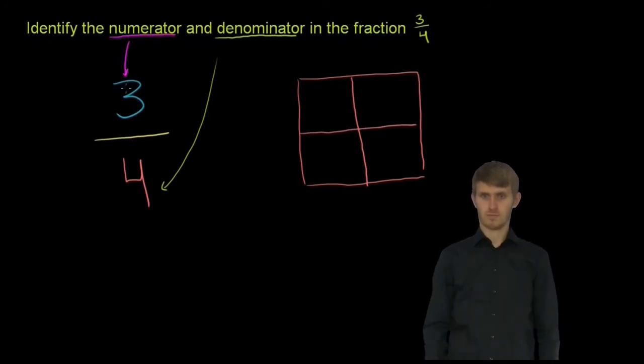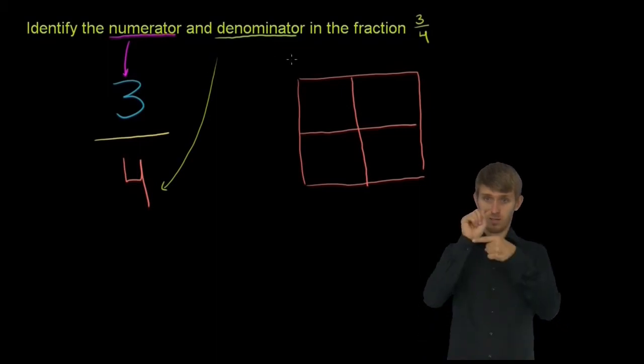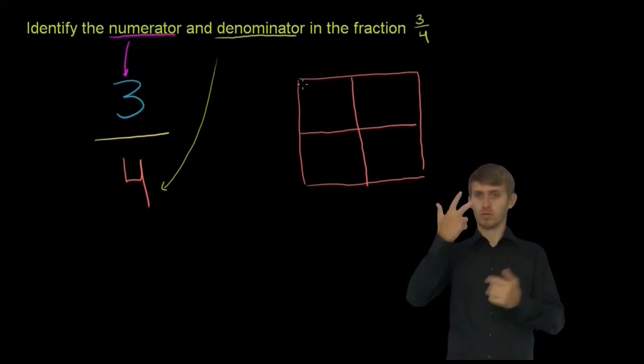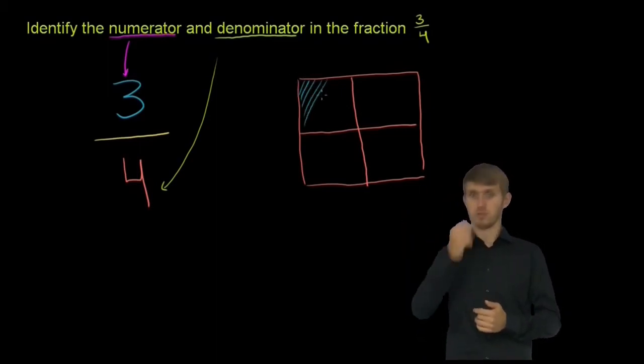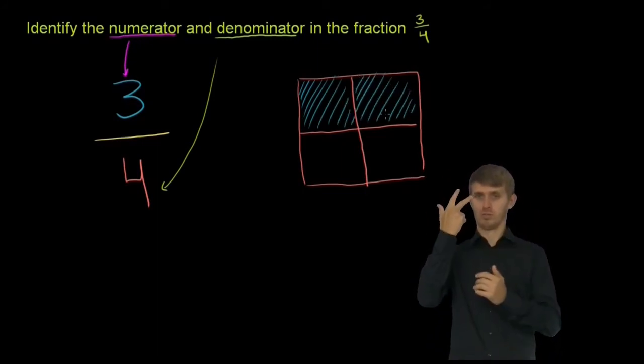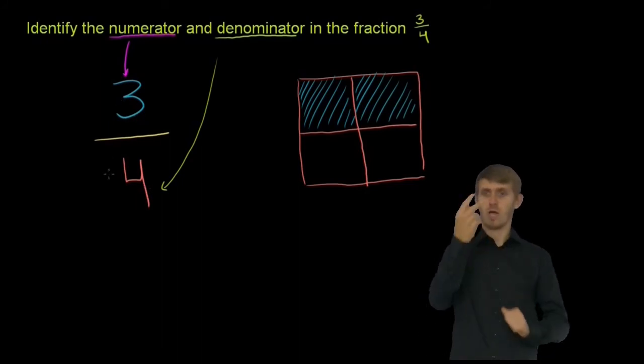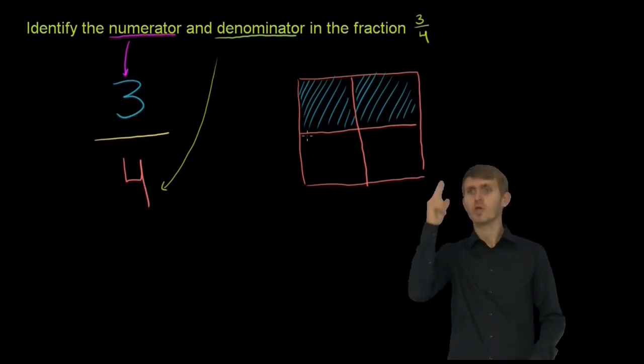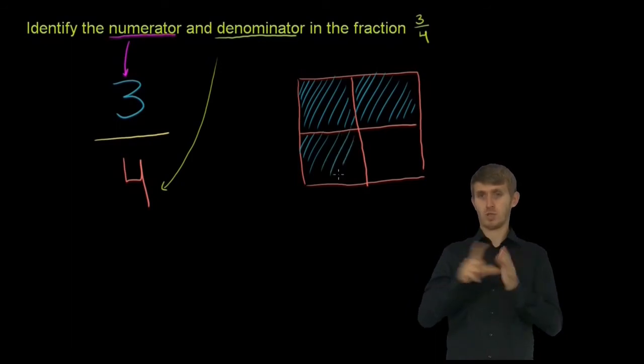And then 3 says we are representing 3 of those 4 pieces. So this 3 tells us that out of 4 possible ones, we are using 3. Or maybe we're eating 3. So you can imagine someone says, I ate 3 fourths of a pie. This would be read as 3 fourths. They're eating the blue portion of the pie if we cut it this way.